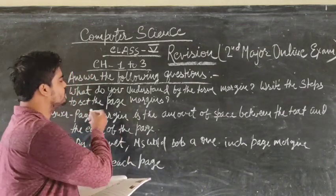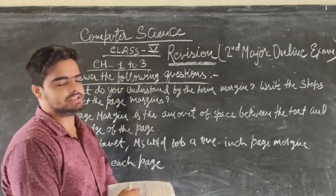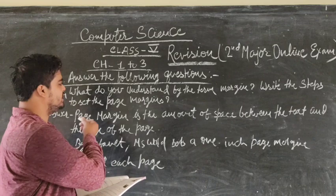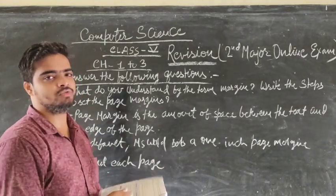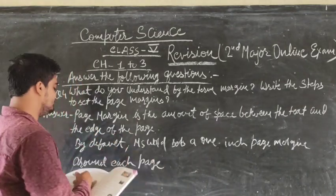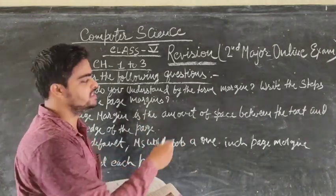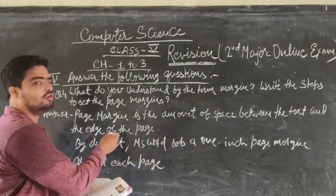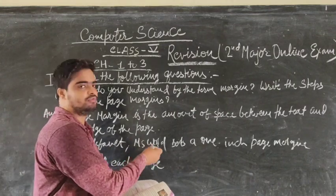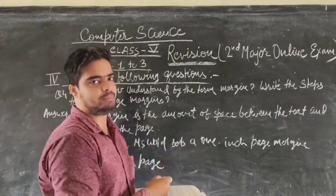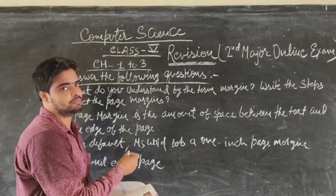Question 4: What do you understand by the term margin? Write the steps to set the page margin. Answer: Page margin is the amount of space between the text and the edge of the page. By default MS Word sets a 1 inch page margin around each page.